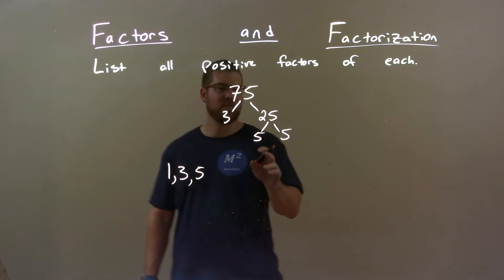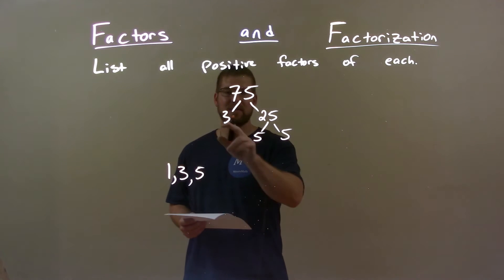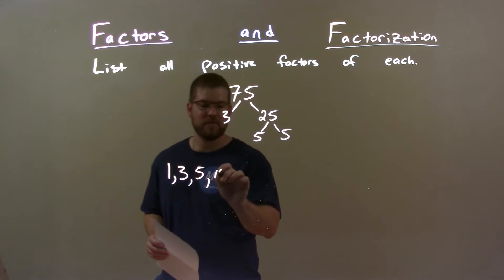Now I think for 6, next smallest number I can multiply together is maybe 5 times 3. That's going to be a 15.